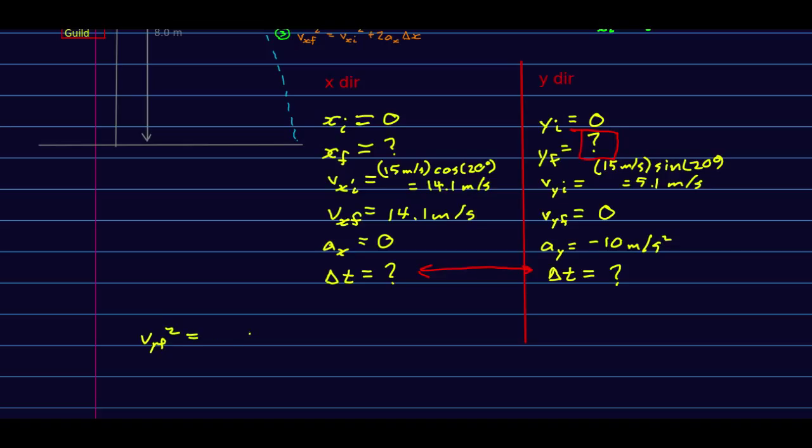v_yf squared equals v_yi squared plus 2 a_y delta y. I'll solve for delta y, so delta y is v_yf squared minus v_yi squared all over 2 a_y. Now it's time to plug in some numbers and get a final answer. You can make that a little simpler by realizing that v_yf is zero. So I'm going to pause the video and plug in the numbers.